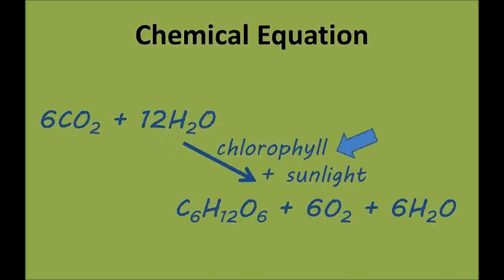Then we use chlorophyll and sunlight to take all the atoms in those molecules and rearrange them, and we end up with one molecule of C6H12O6, which is the chemical symbol for glucose. We also get six molecules of oxygen, or O2, and six newly made molecules of H2O, or water.